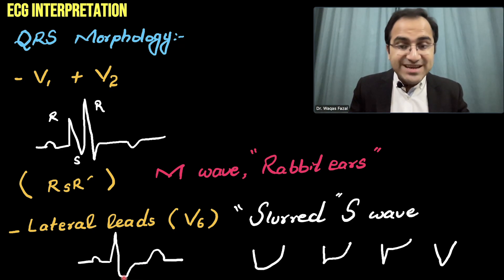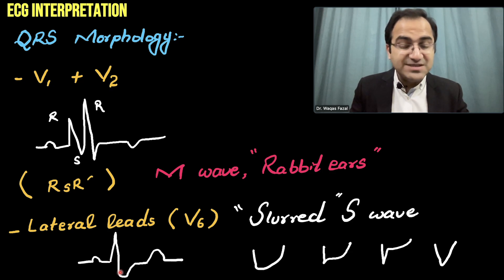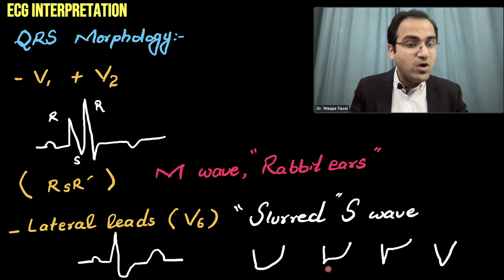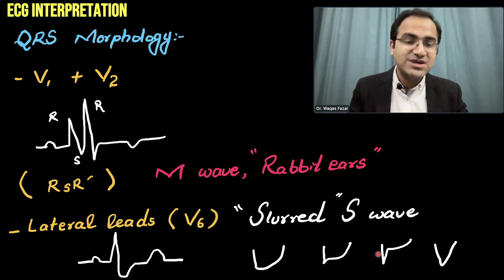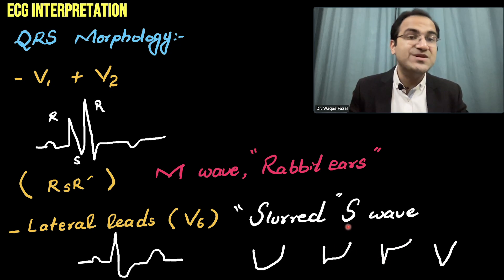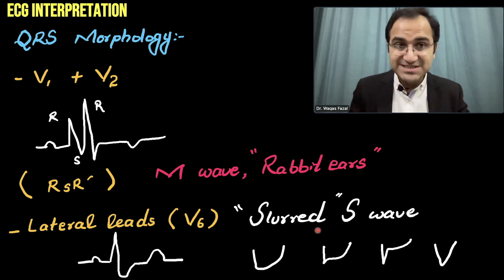The slurring of the S wave can appear in various patterns — the S wave can take several different shapes. These are the different patterns in which slurring of the S wave can be seen.